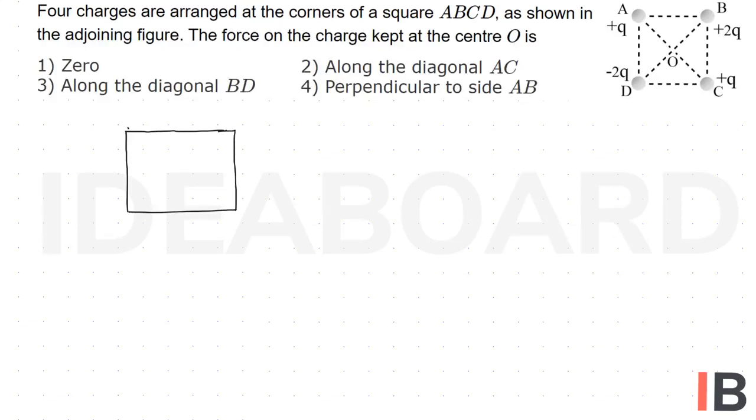So consider four charges are kept at the four corners. Suppose this is A, this is B, and here this is C and this is D. Charge at A is plus Q, charge at B is plus 2Q, charge at C is plus Q, whereas charge at D is minus 2Q.